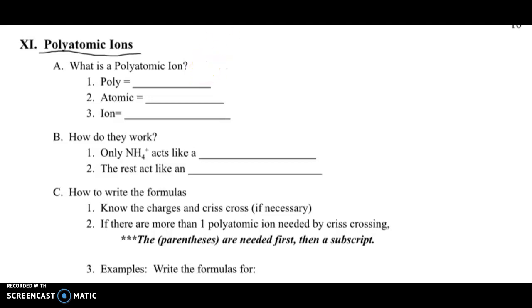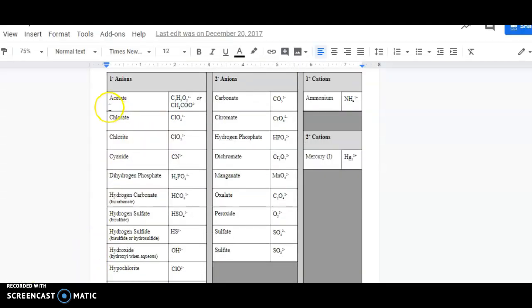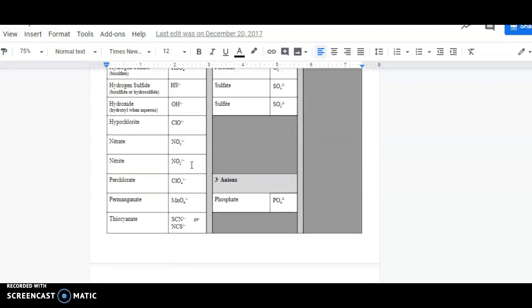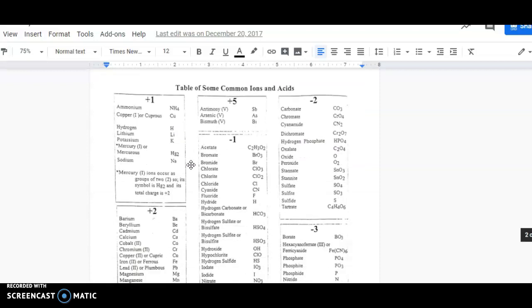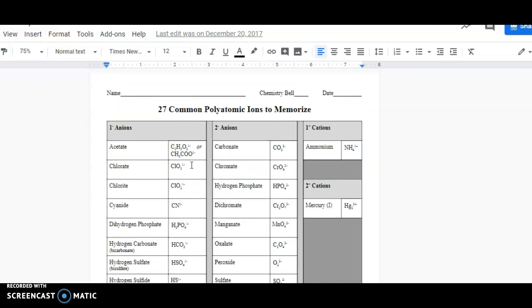So the first part, we need to look at what actually is a polyatomic ion. The prefix poly means many. The word atomic refers to atoms, and ion means a charged particle. If you're in level one chem, you already have this list and you've been working on memorizing them. Polyatomic ions are ions that are made up of a couple of atoms—two, three, four atoms or more. They are covalently bonded together, but they themselves are a charged unit that works together. We have 27 we're going to use most commonly.